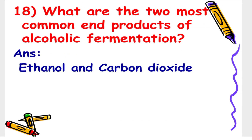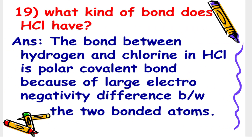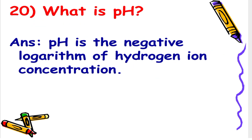Next: What are the 2 most common end products of alcoholic fermentation? The answer is ethanol and carbon dioxide. Next: What kind of bond does HCl have? The answer is the bond between hydrogen and chlorine in HCl is a polar covalent bond, because of the large electronegativity difference between the two bonded atoms. And the last question: What is pH? The answer is pH is the negative logarithm of hydrogen ion concentration.